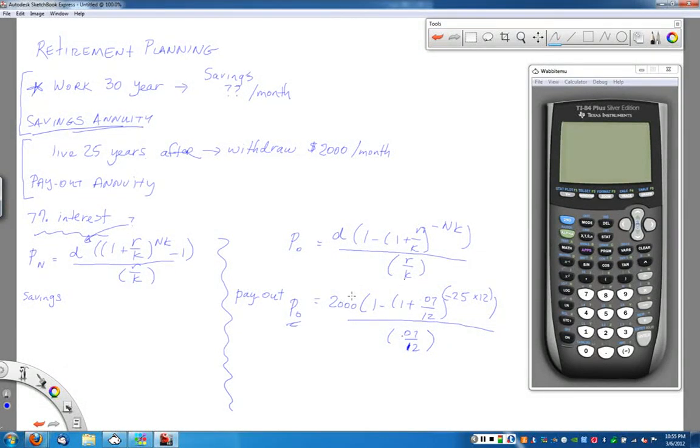To take out $2,000 a month for the next 25 years, how much money do I need in that retirement account? The advantage is however much I need in my retirement account to start my withdrawal is going to be how much I want at the end of all of my savings process. So whatever I get for P₀ here, the starting amount of my payout, is going to be the Pₙ here, the balance after saving during my working life.